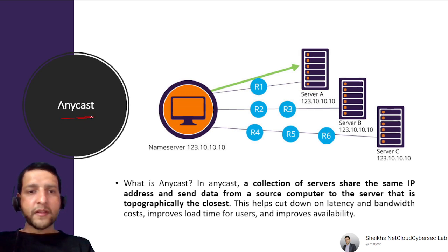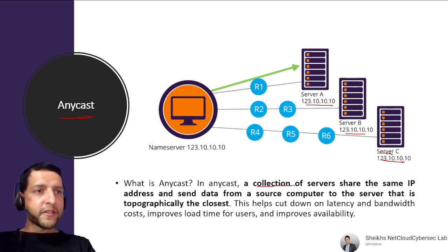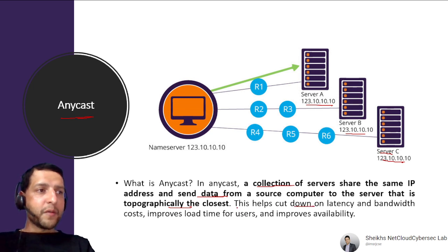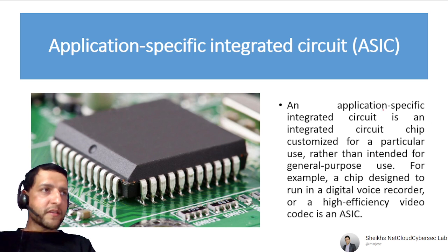Anycast is an important concept with IPv6. Multiple servers are given the same IP address. When you need to communicate, you always communicate with the nearest one. A collection of servers share the same IP address, and data is sent from source to the server that is topographically closest. This helps cut down on latency and bandwidth cost, improves load time, and improves availability. Think of it as one-to-nearest.